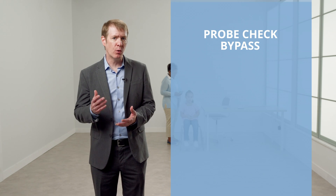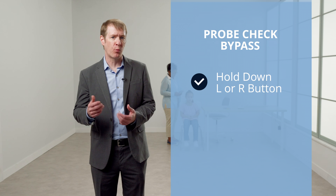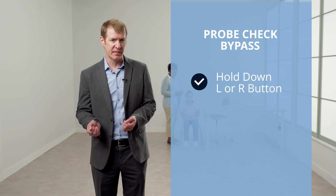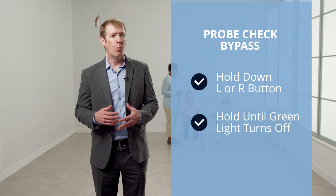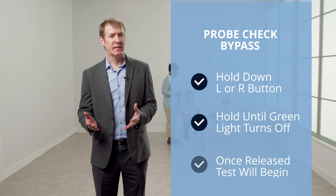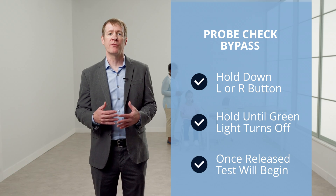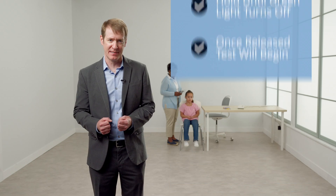If a patient has PE tubes, the probe check phase will not proceed and the probe check will need to be disabled. To disable, select the ear to be tested by holding down the right or left button for three seconds until the green ready light turns off. Once the key is released, the Cordy will perform calibration and begin the test.